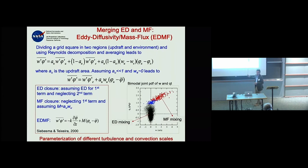The mass flux is just the difference between the properties inside the updraft and the mean, times the momentum in those plumes, times the occupied area. If you use eddy diffusivity for the environmental term and keep the mass flux, you get a parameterization that represents both small-scale and large-scale mixing.